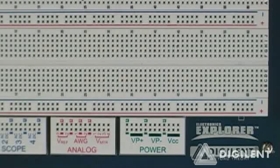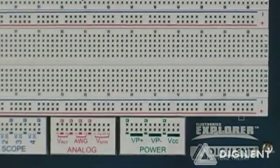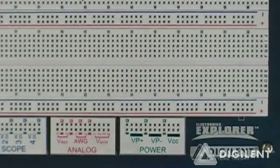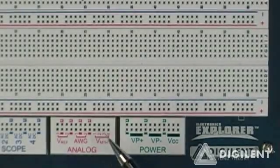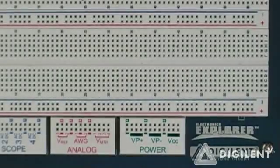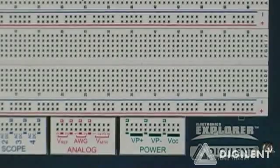Remember that on our other DMMs we had two leads, the COM and then the voltage lead. For this particular board, the COM is always at ground. So, if you want to measure a voltage difference that's not relative to ground, you need to measure two voltages and take the difference. I'll demonstrate that later on after we've talked about power supplies.